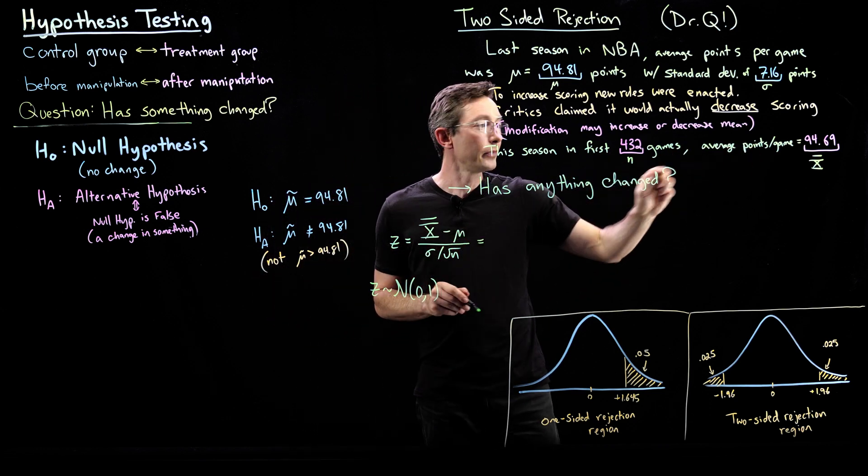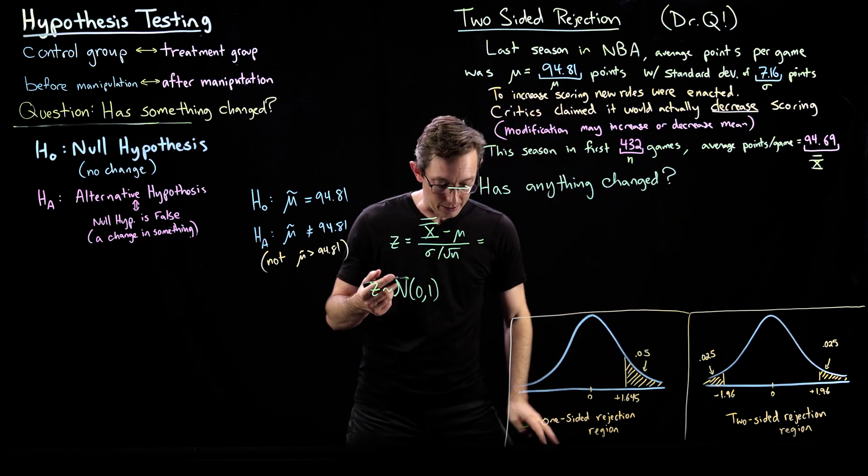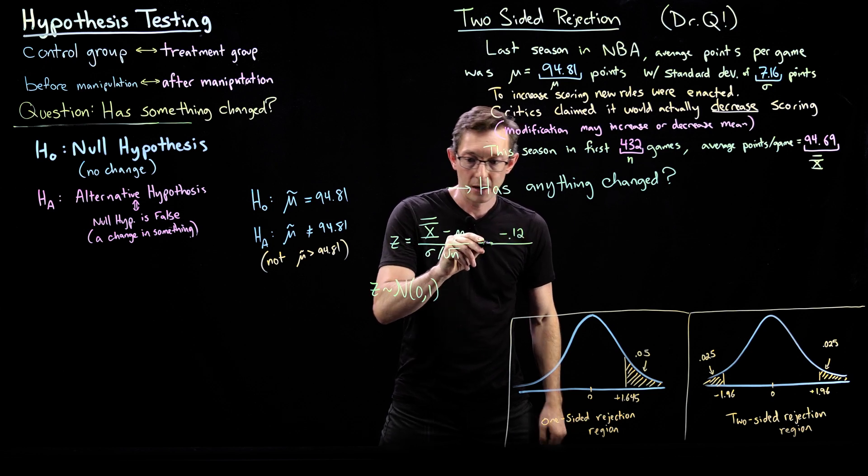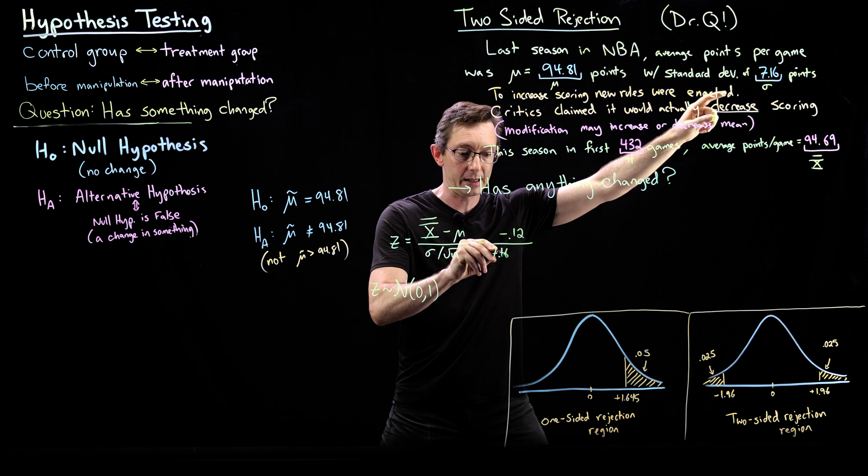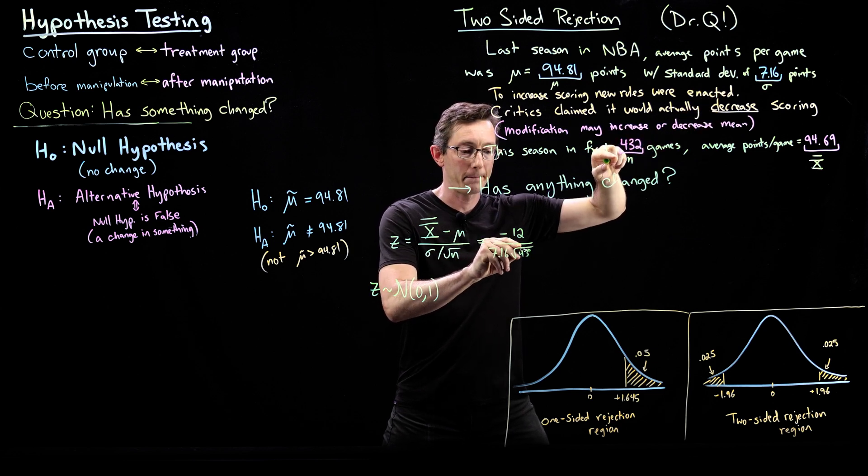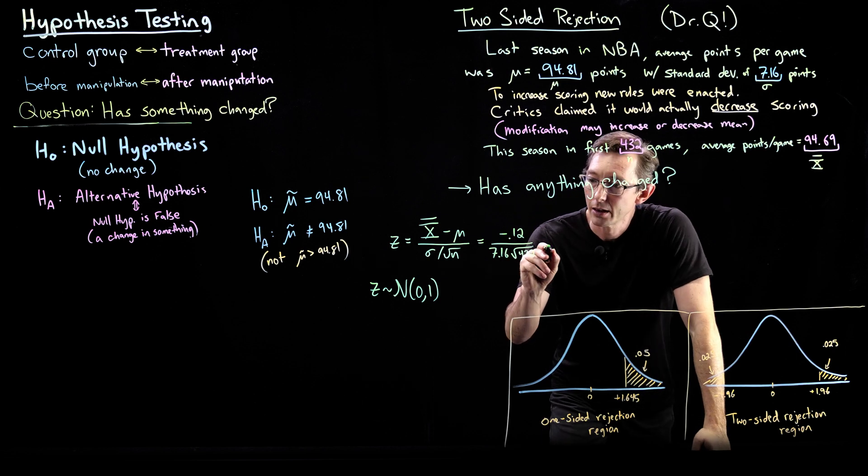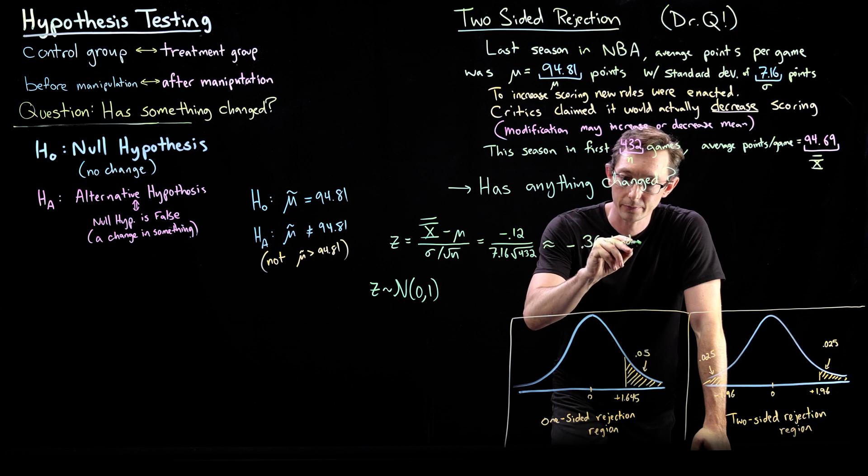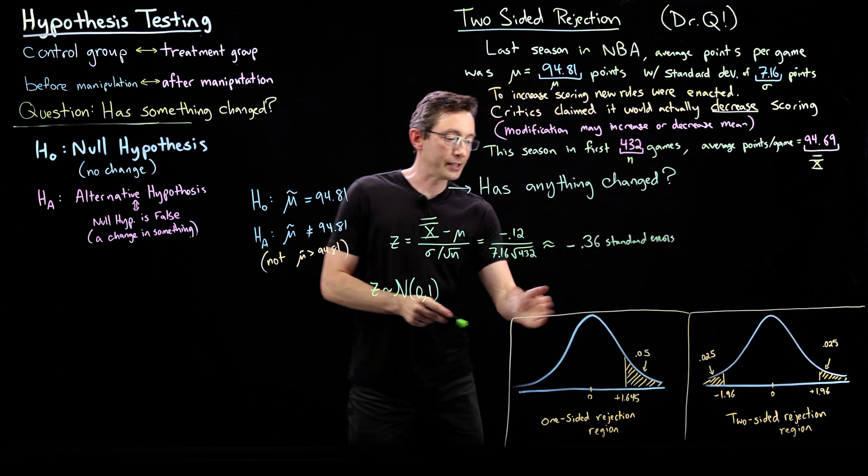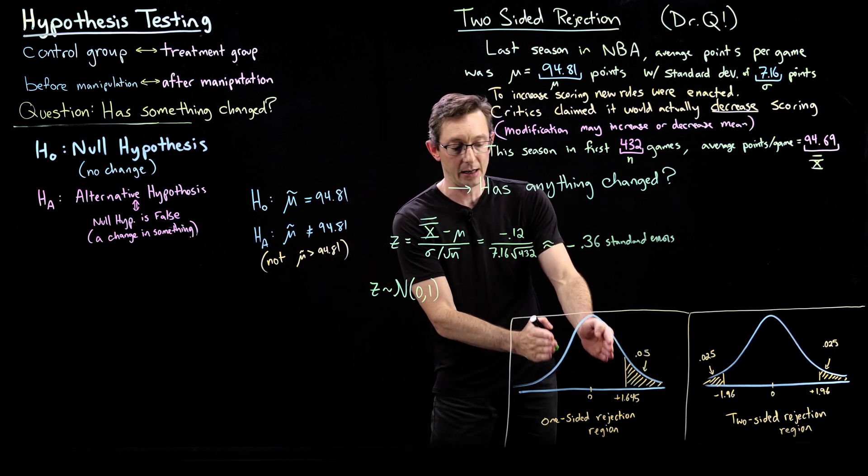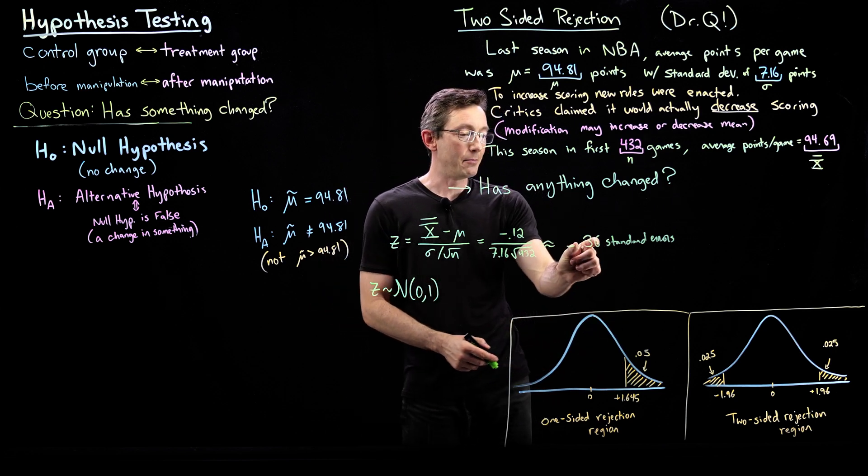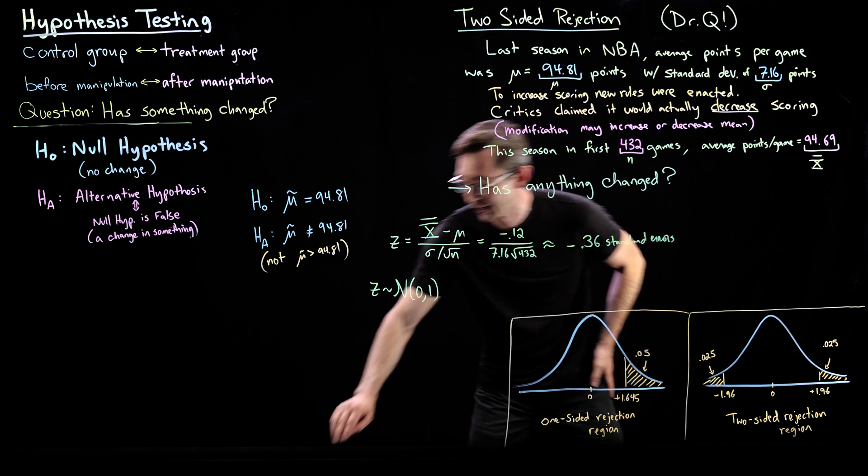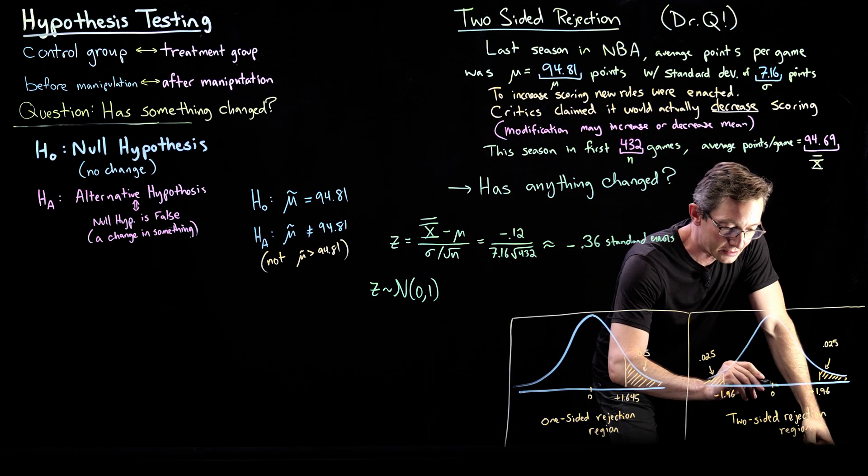I can plug in the values now. This is equal to 94.69 minus 94.81, which is minus 0.12, divided by sigma 7.16 times root 432. You can plug these into your calculator. This is going to give you a number that is approximately minus 0.36 standard errors. We always say standard errors because that tells us how far away a standard deviation in this unit normal would be. 0.36 standard errors is actually really in the bulk of the distribution. It's squarely in the middle of this distribution.